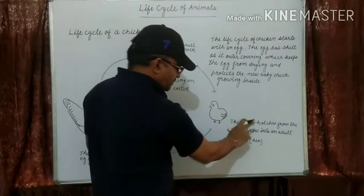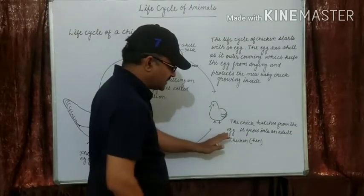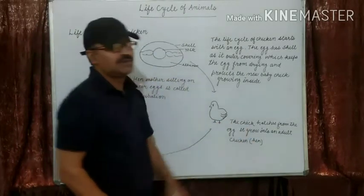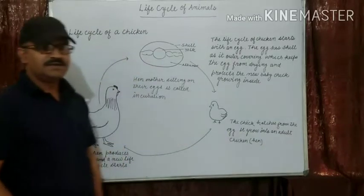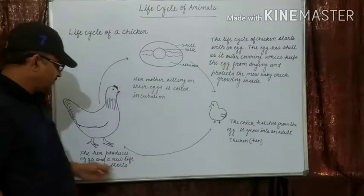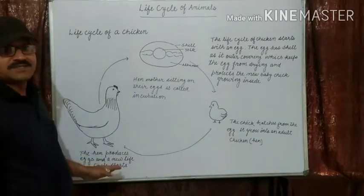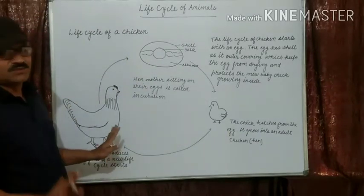The chick hatches from the egg. It grows into an adult, and the adult produces eggs. This is how the life cycle continues.